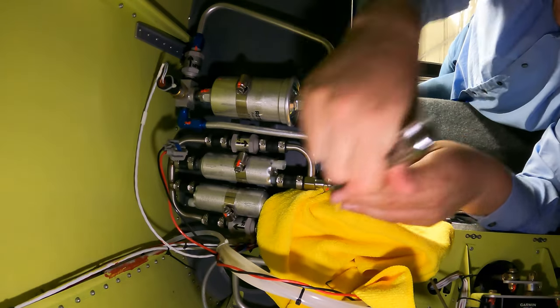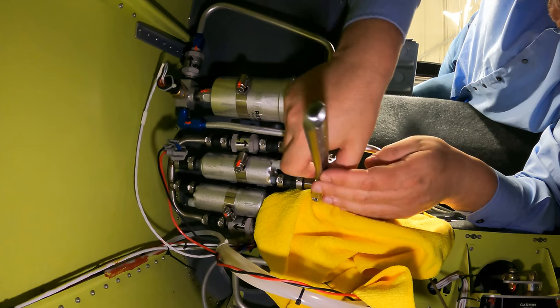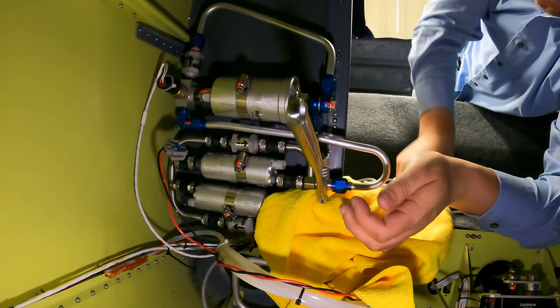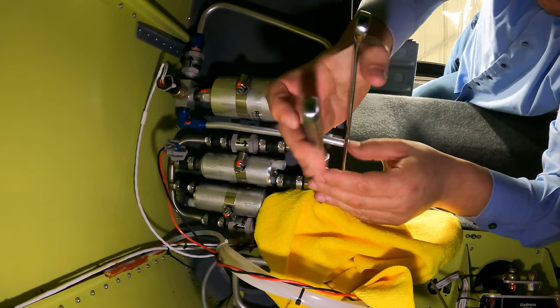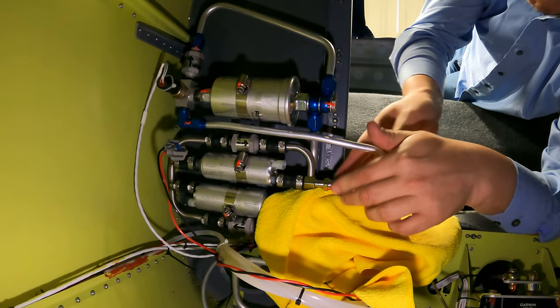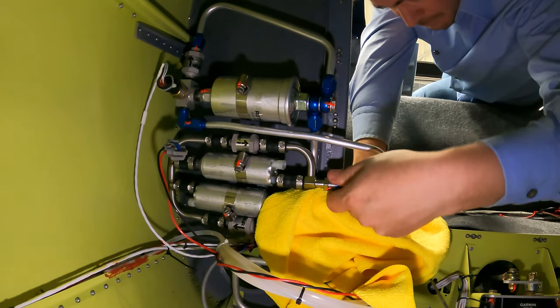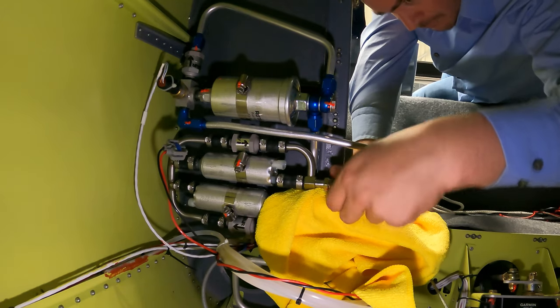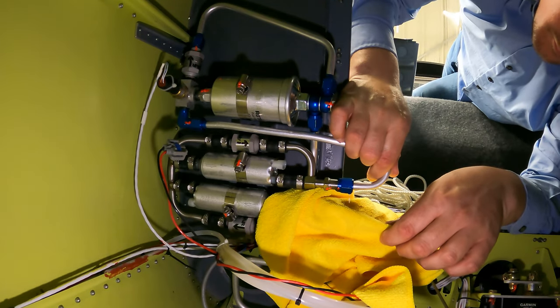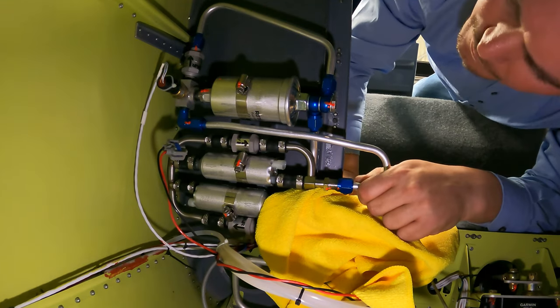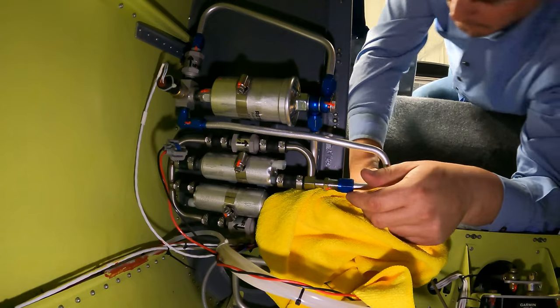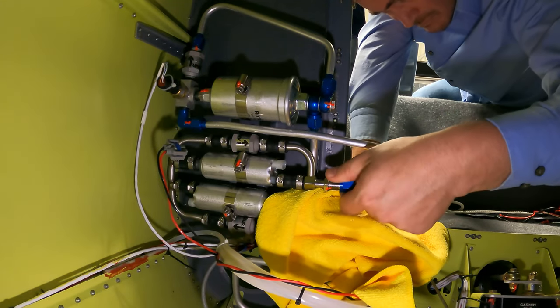A couple towels here to absorb any fuel that's going to be leaking out of these tubes. We're going to use two wrenches here. We don't want to put any sort of torque on the fuel pump assembly itself. Easy peasy. Well, that's not too bad. I spoke too soon.